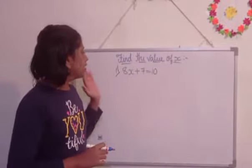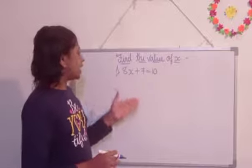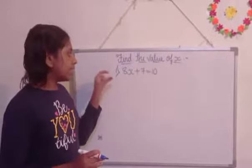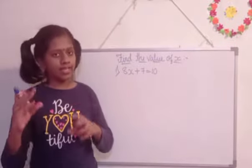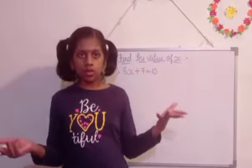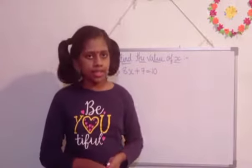So here, the first question is like this: 8x plus 7 is equal to 10. Here, there is a variable named x. So we are going to find the value of x. There is a number that we are not knowing. So let's find that number.